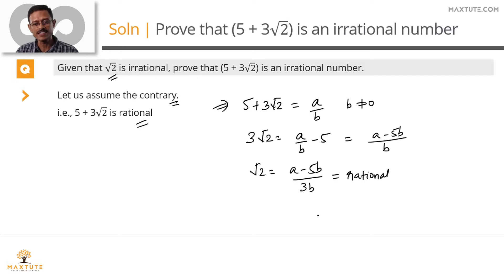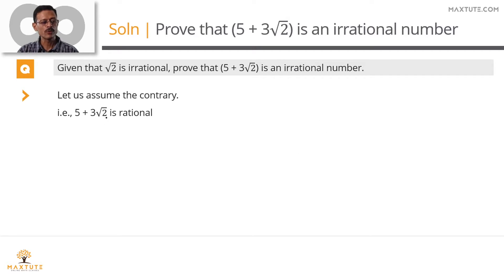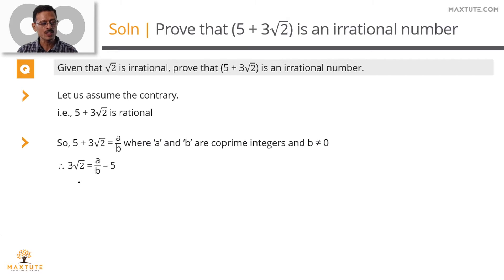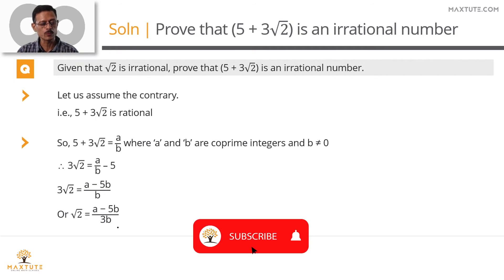How do you actually write this in the examination? In the next slide, we will quickly run through the steps. We assume the contrary: that 5 plus 3 root 2 is a rational number. If it is rational, we can express it as a/b where a and b are integers, co-prime to each other and b ≠ 0. Subsequent steps will express 3 root 2 and then root 2 in terms of those integers.